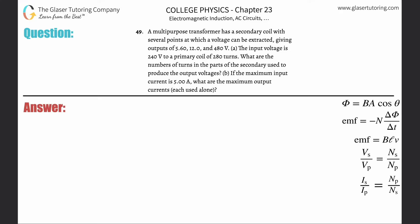Number 49, a multipurpose transformer has a secondary coil with several points at which a voltage can be extracted, giving outputs of 5.6, 12, and 480 volts. Letter A, the input voltage is 240 to a primary coil of 280 turns.